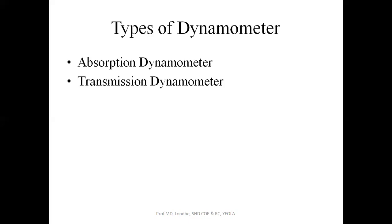While in transmission type there are three types of dynamometer. One is belt transmission dynamometer. Second one is Davis-Gibson torsion type of dynamometer. And the last is epicyclic dynamometer. We will see each one individually.